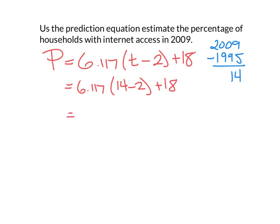So, our prediction equation would be 6.117 times 14 minus 2 plus 18. With all that calculating, you do it by hand. You could do it in a graph and calculator, however you want to do it. But you should end up with an answer of 91.404. And, of course, to answer the question, it's not 91.404. It's 91.404 percent. So, make sure that you include units with your answer. And there we go.